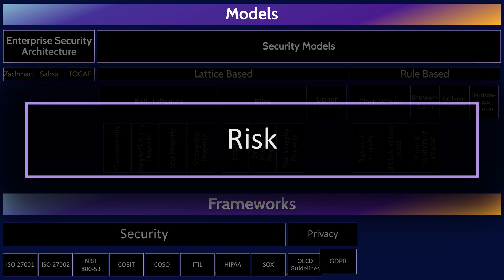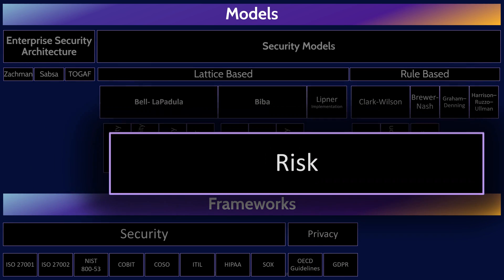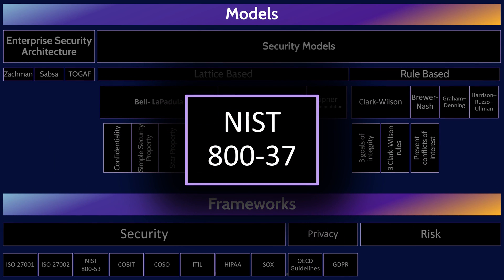Now let's talk about risk frameworks. The major risk framework to know is NIST 800-37, the Risk Management Framework. The RMF provides a structured process for managing security and privacy risk. Make sure you know the six steps of the RMF in order: step one, categorize information systems; two, select security controls; three, implement security controls; four, assess security controls; five, authorize information systems; and six, monitor.